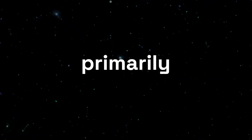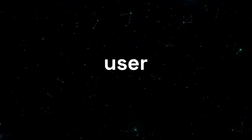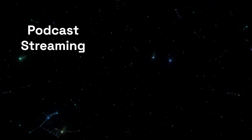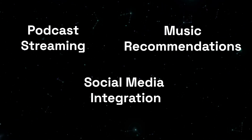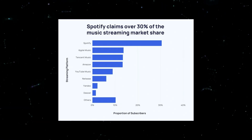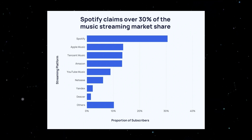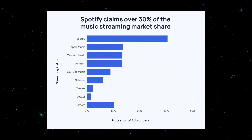The initial version primarily offered streaming music with a simple user interface, but it didn't include many features we see today, like podcast streaming, complex algorithms for music recommendations, or integration with social media platforms. By launching this MVP version, Spotify was able to enter the market quickly and gain a large chunk of it.